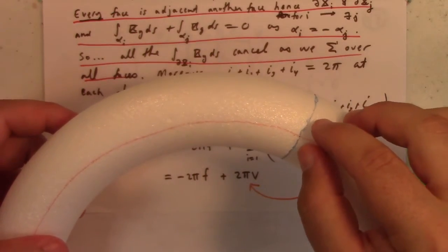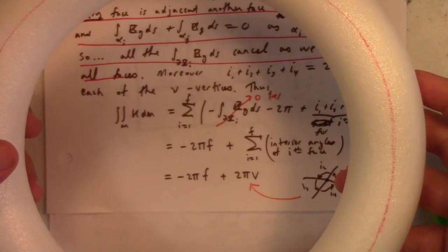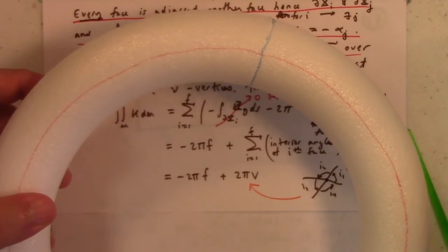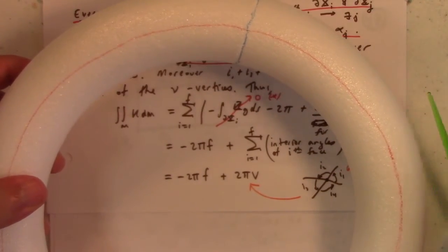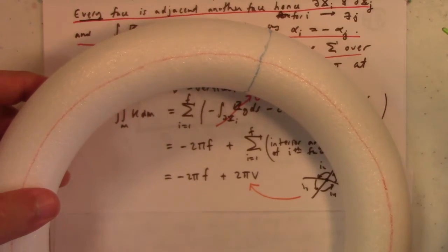There's only one vertex in this rectangularization. One rectangle covers the whole torus. There's just this one vertex right there. How many edges are there?